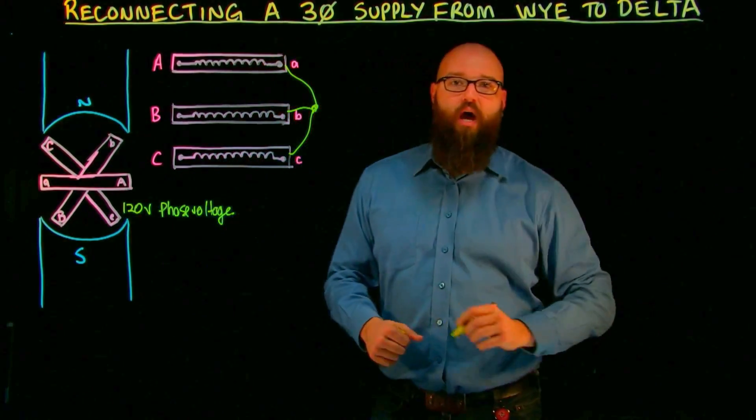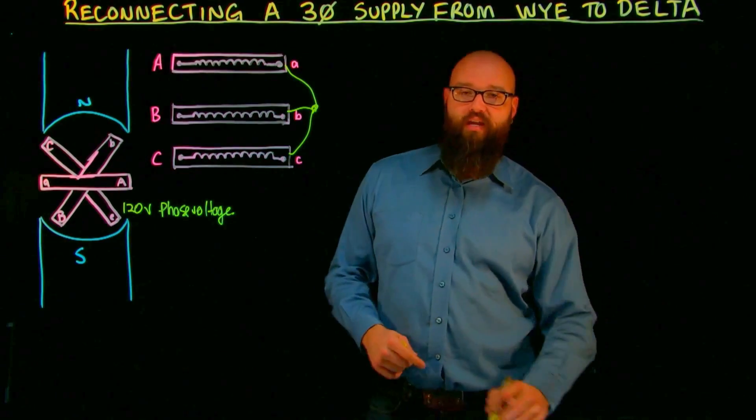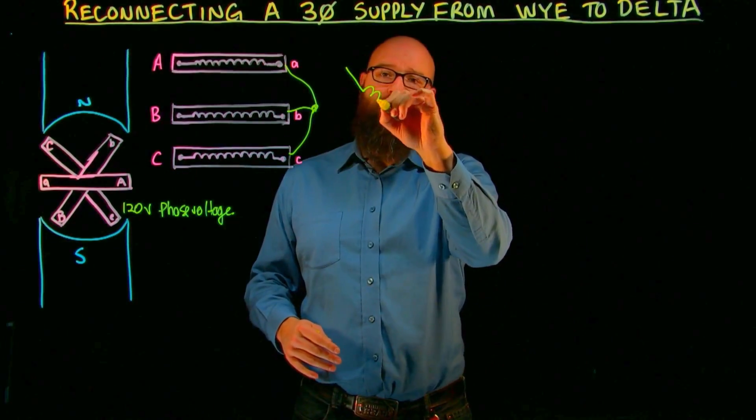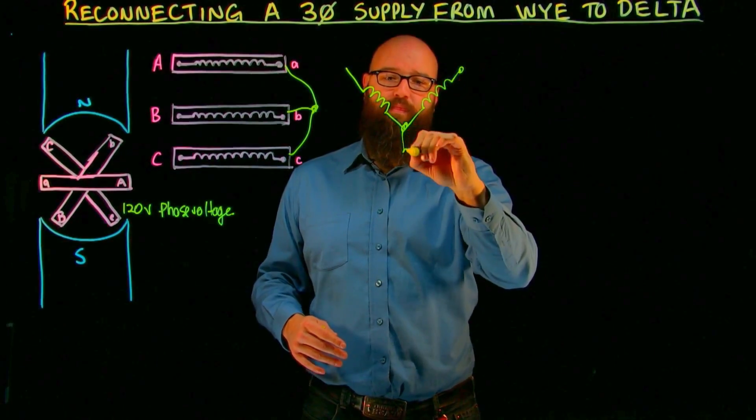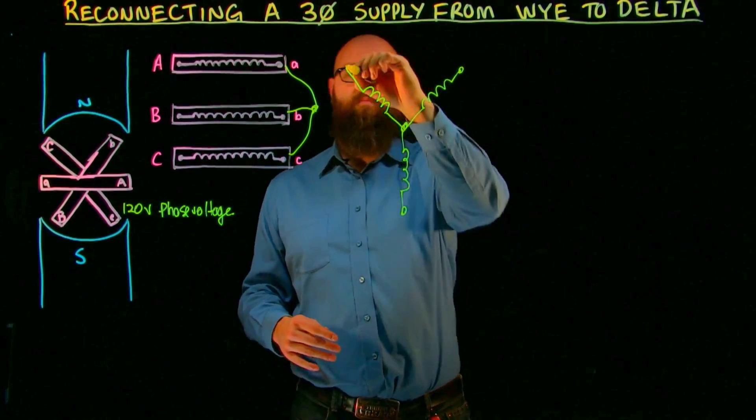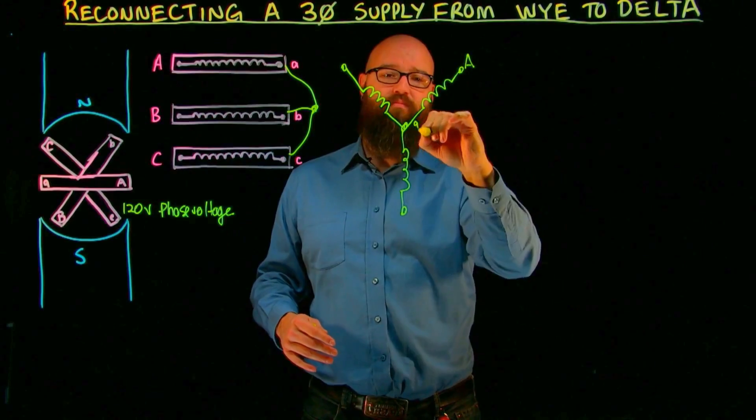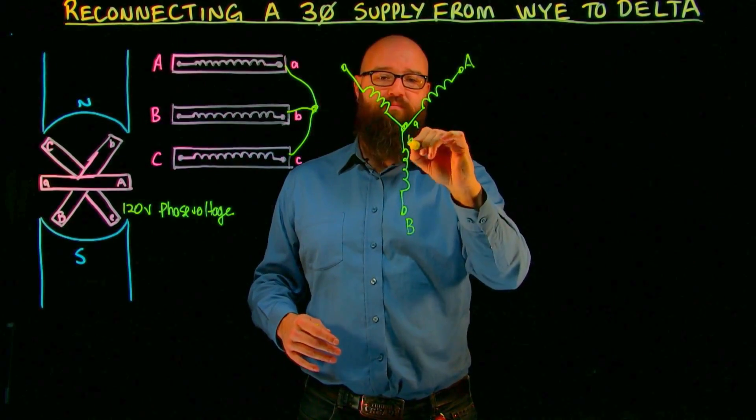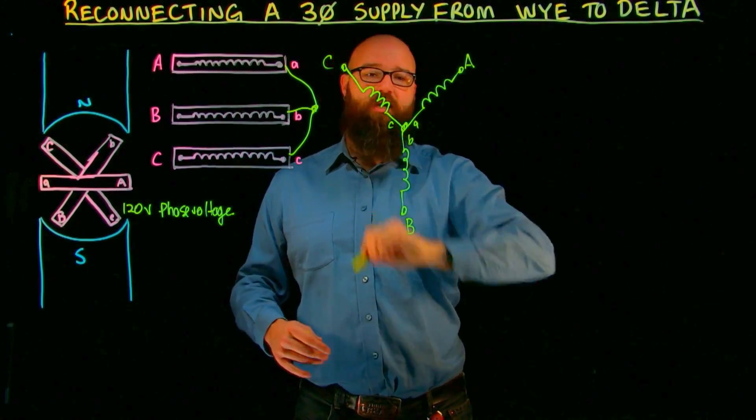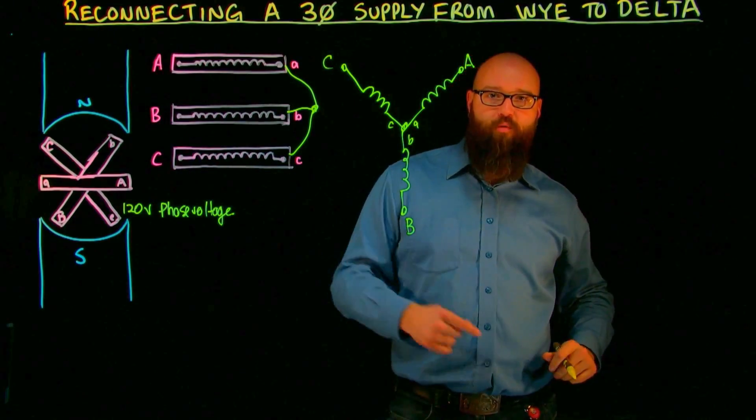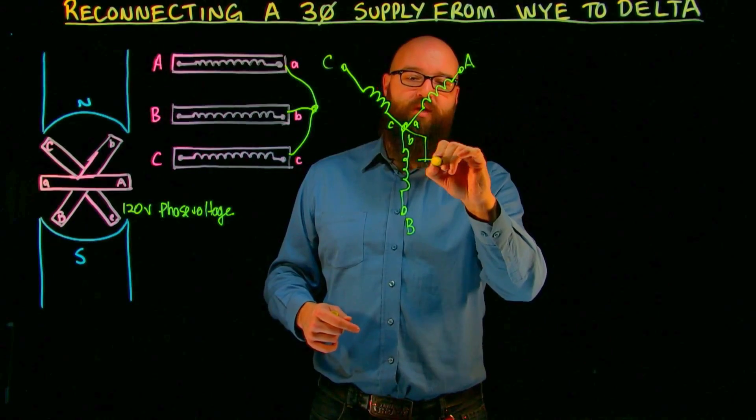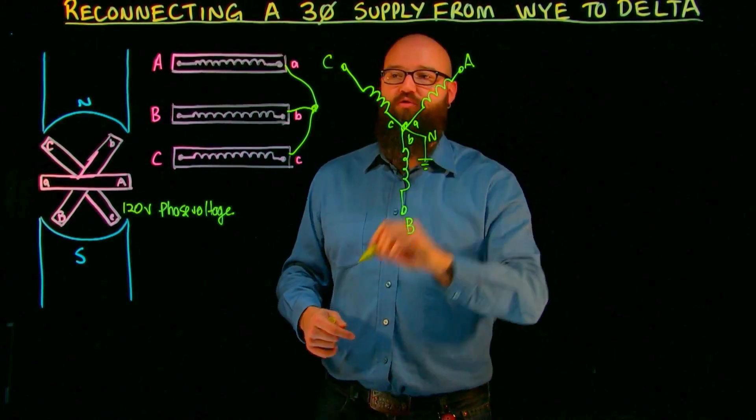This makes our Y connection and if we look at it like this, there's our A, our B, and our C. And in the middle we have what's known as our XO point or our star point or our neutral point. This point would be our neutral.